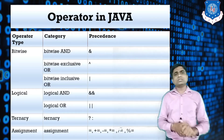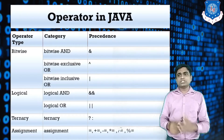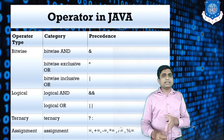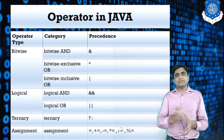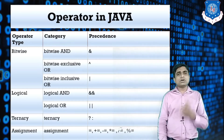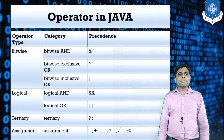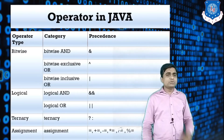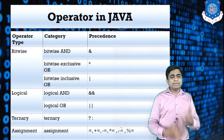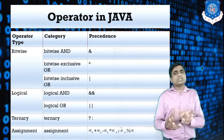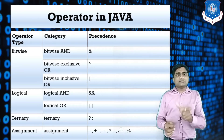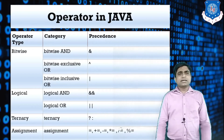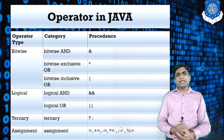The last operators are ternary and assignment. The ternary operator can be used in place of an if statement, using a question mark and colon. For example: a > b ? a : b — if the condition is satisfied it returns a, otherwise b. The assignment operator is used to assign a value to a variable, like a = 5 or b = a.